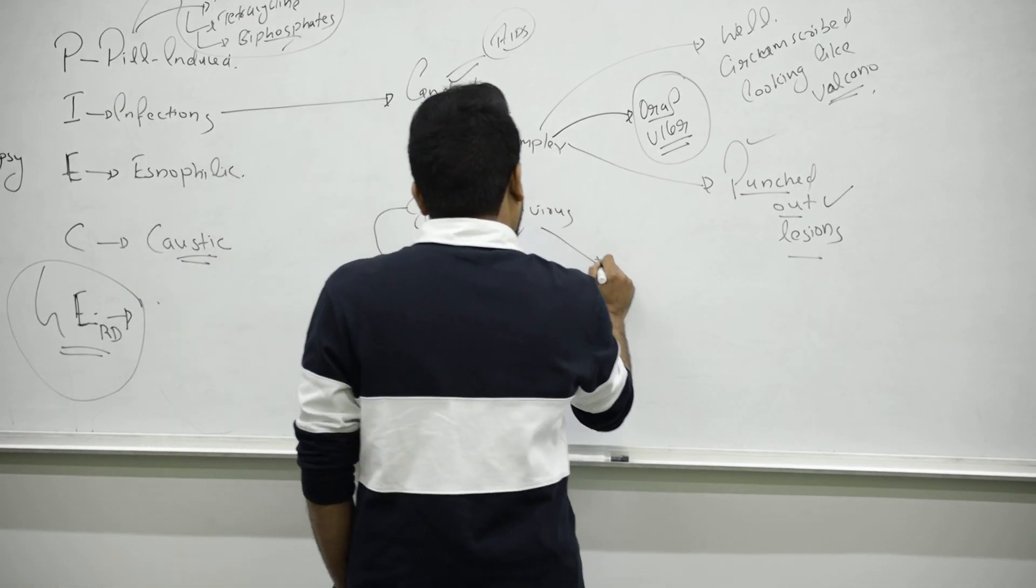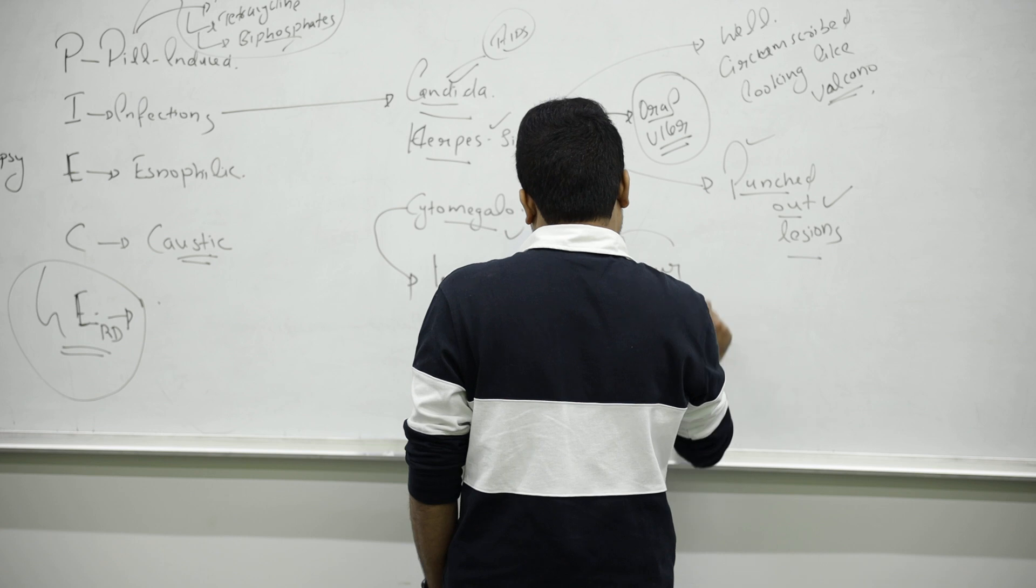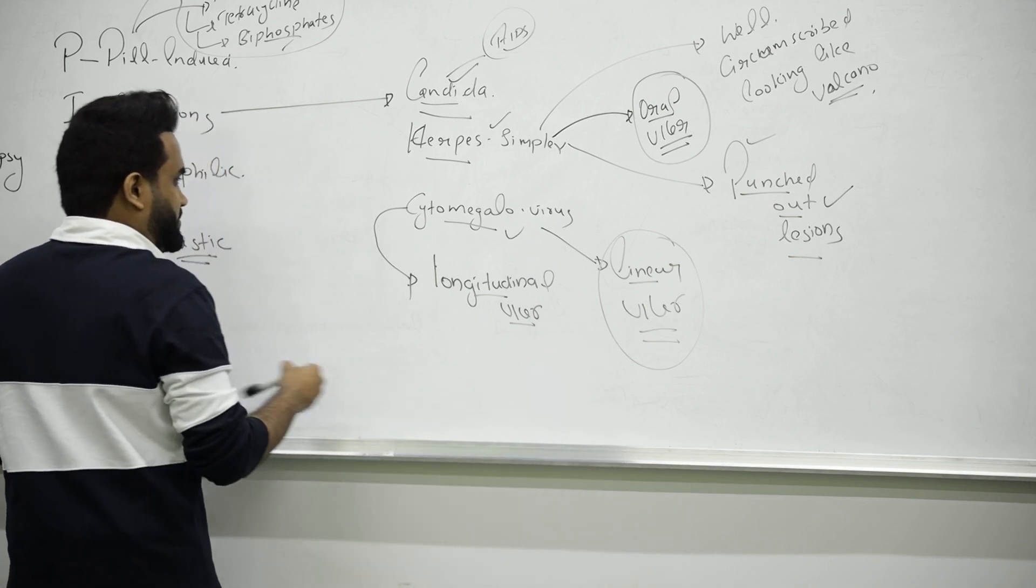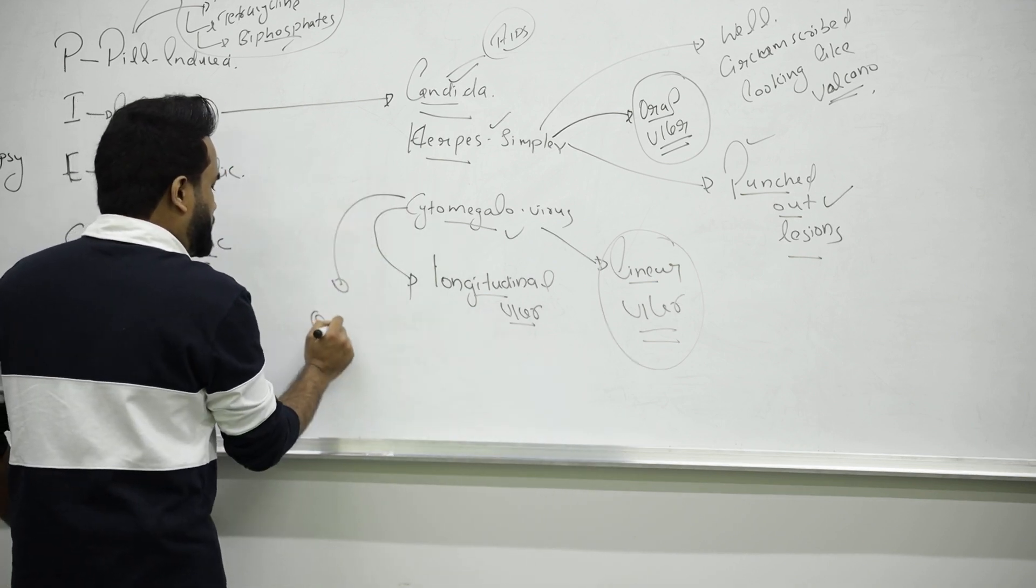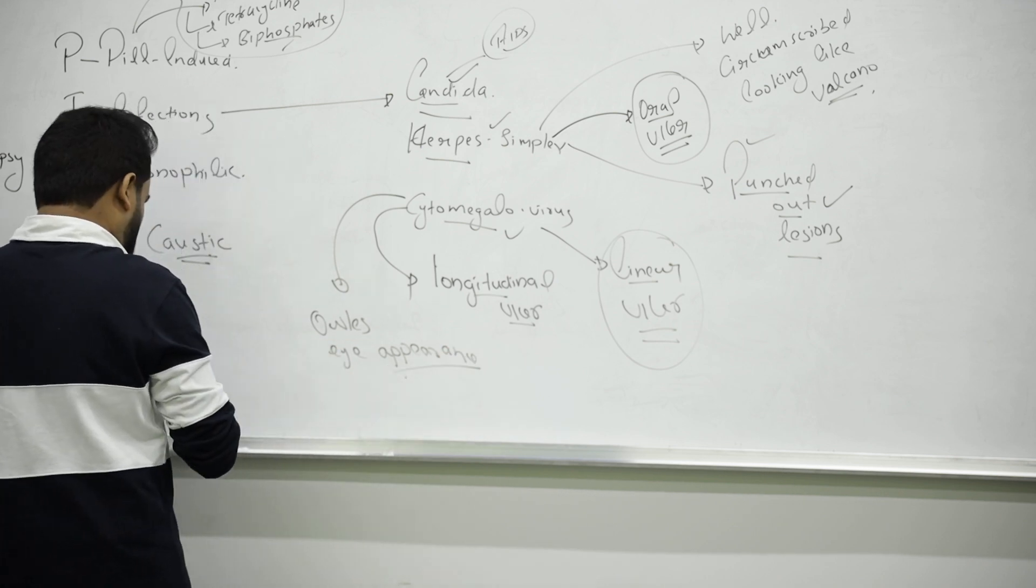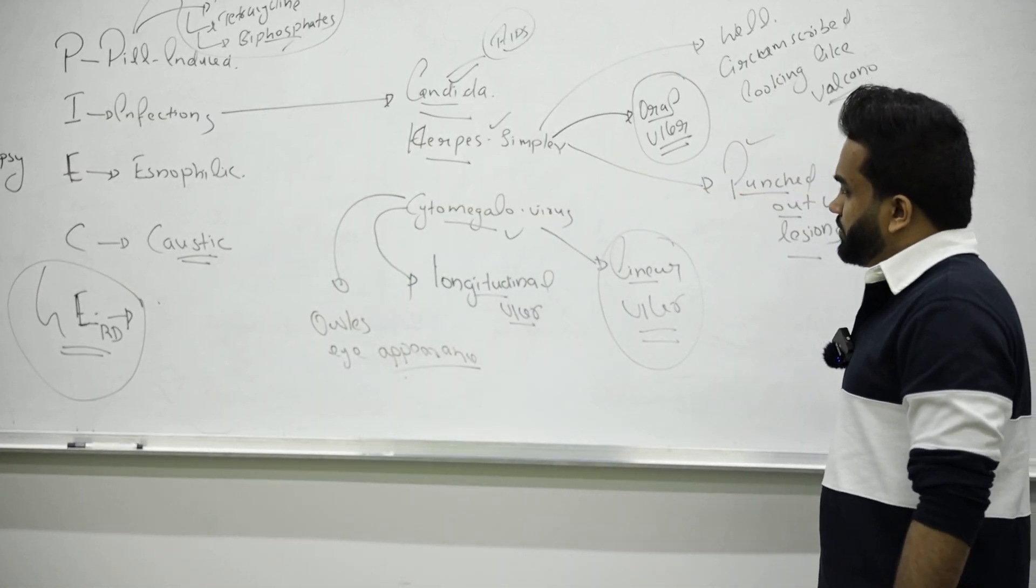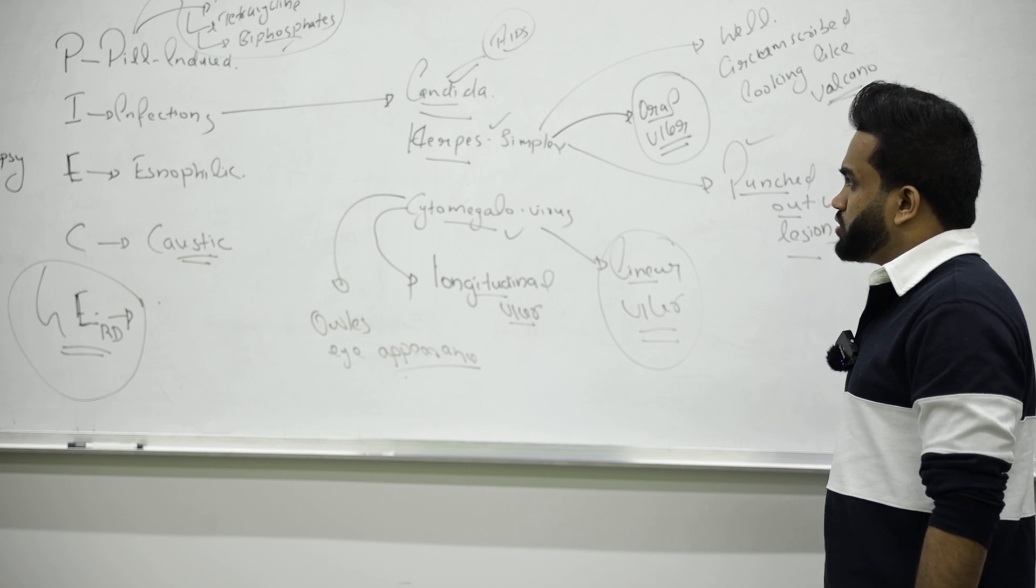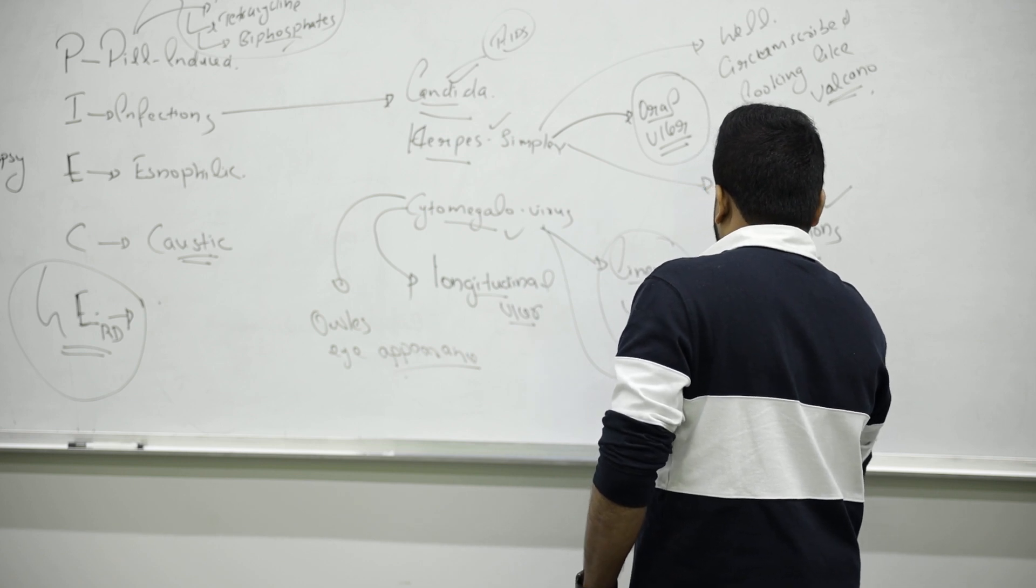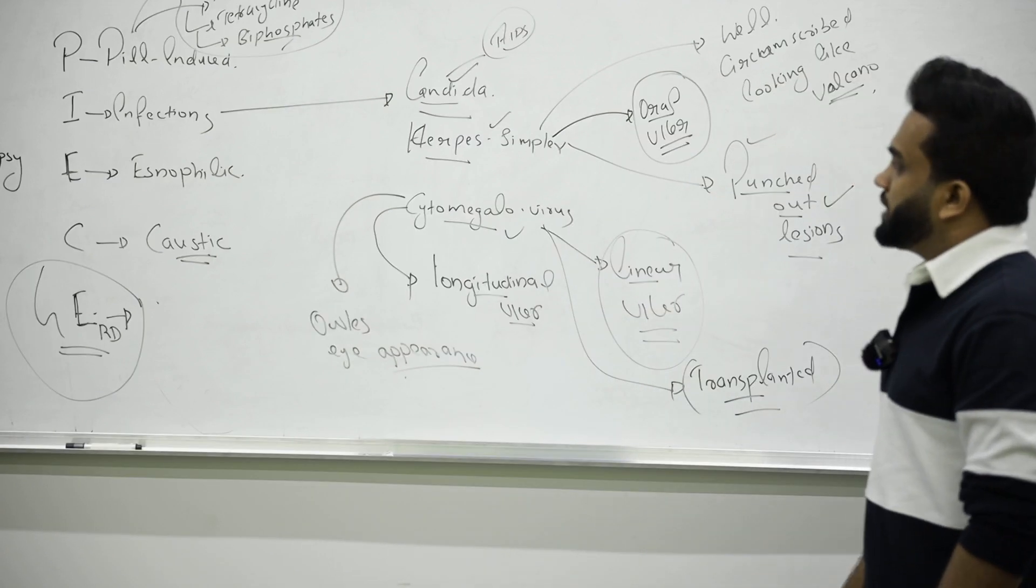Or we call it linear ulcer - CMV ulcer is linear. Remember, cytomegalovirus - normally they will give you in the exam someone has owl's eye appearance. CMV is very common in people who undergo transplantation. In transplanted patients you can expect cytomegalovirus infection.